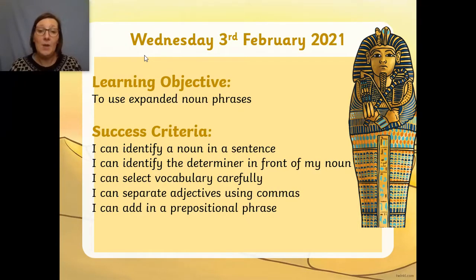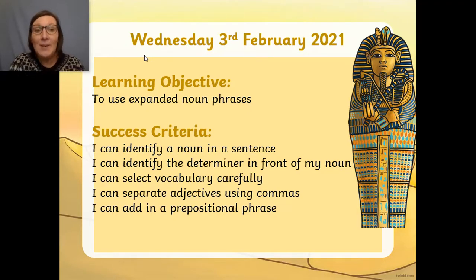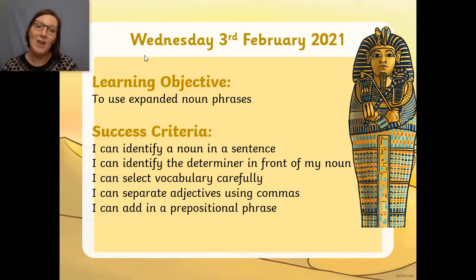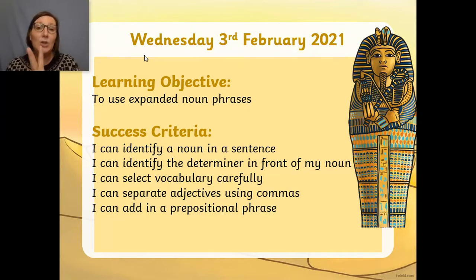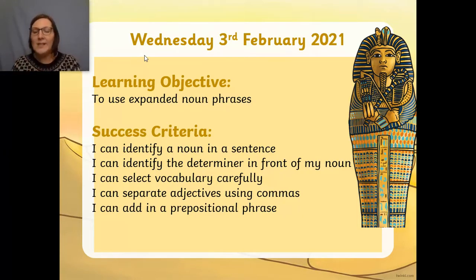To be successful at this, we need to be able to identify a noun in a sentence. We also need to be able to identify the determiner in front of our noun. The determiner is very easy, and when you realize what those words are, you'll go, 'Oh yeah, I know that!' We also need to select vocabulary carefully to make sure it has impact for the reader. We must separate adjectives using commas — that's really key when expanded noun phrases contain two adjectives. And we'll be adding in a prepositional phrase — so where this thing is: above, below, next to, under, in the distance. You're going to be really successful at this today, Year Three!